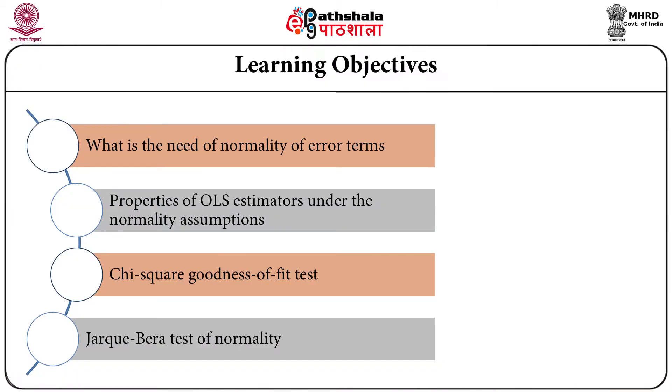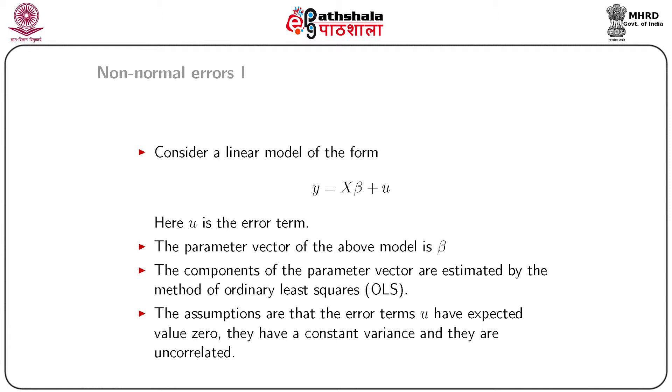In this module we will discuss one of the assumptions of a linear model: the normality of errors. We will specifically discuss what happens when we do not have normality of errors, what problems we encounter, and what are the properties of the OLS estimates of the parameters when we assume normality of the error terms in a linear model. We are discussing non-normal errors and how normality influences estimation of parameters.